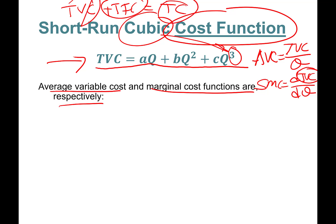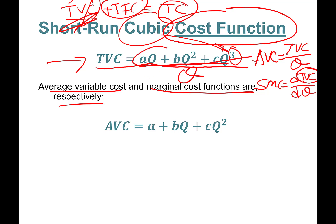Because fixed cost doesn't change, marginal cost is the same whether you differentiate total cost or total variable cost. Average variable cost equals TVC divided by quantity: dividing through gives a plus b·q plus c·q squared.